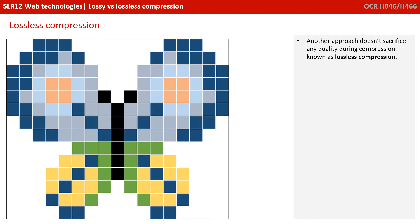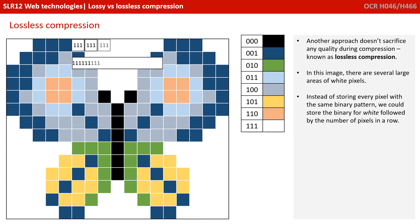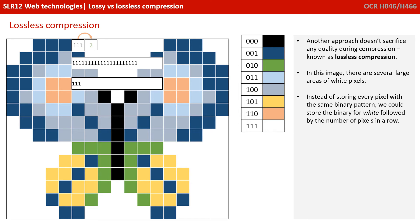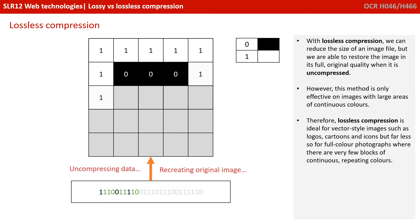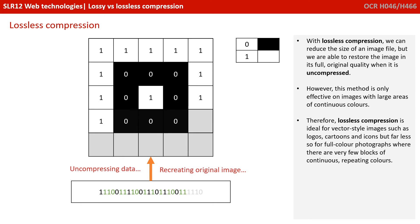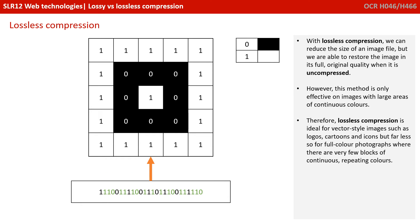Another approach doesn't sacrifice any quality during compression at all, and this is lossless compression. In this image, there are several large areas of white pixels. Instead of storing every pixel with the same binary pattern, we could store the binary for white followed by the number of white pixels that occur in a row. With lossless compression, we can reduce the size of an image, but we are able to restore the image in its full, original quality when we uncompress it.